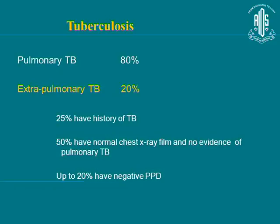Pulmonary tuberculosis accounts for about 80% of all tuberculosis. Extra-pulmonary TB consists of about 20%, and in this subgroup, 25% have a history of pulmonary TB, 50% have a normal chest X-ray with no evidence of pulmonary TB, and up to 20% may have a negative PPD.